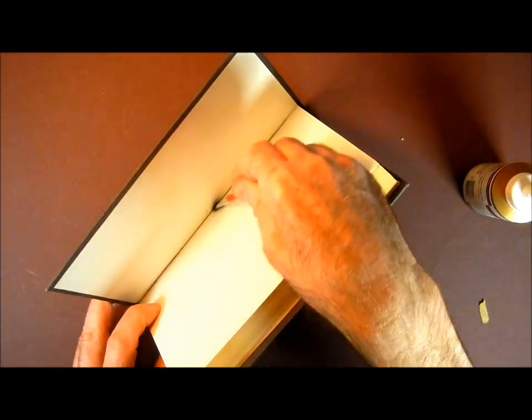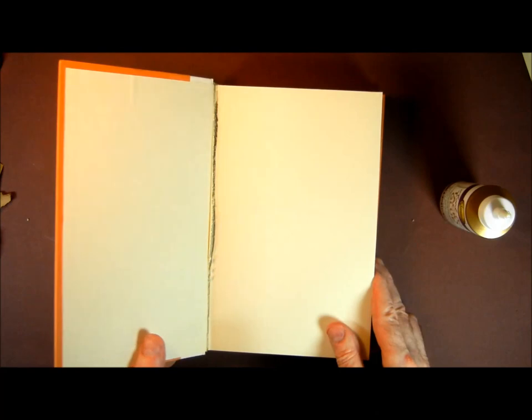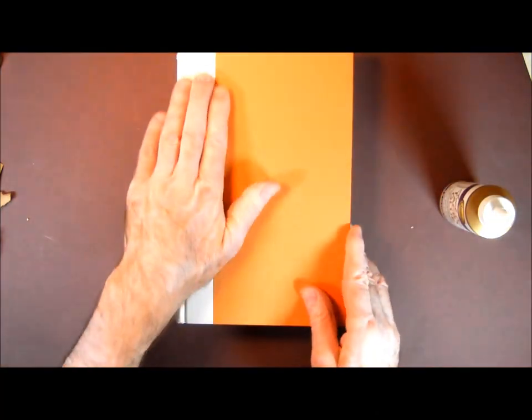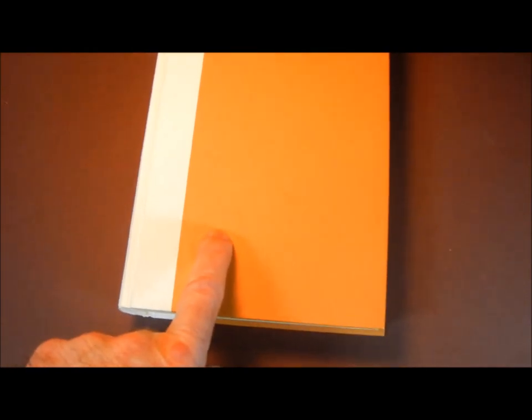Before I close the cover I take a brush and clean up any excess. So now I close the book for 24 hours and let it dry. Closing the book will spread the glue from the spine to the cover.